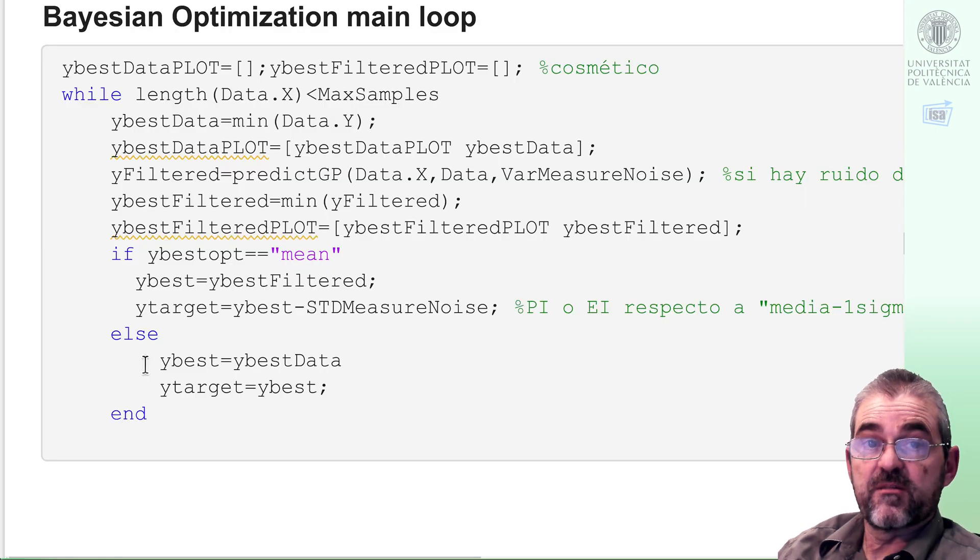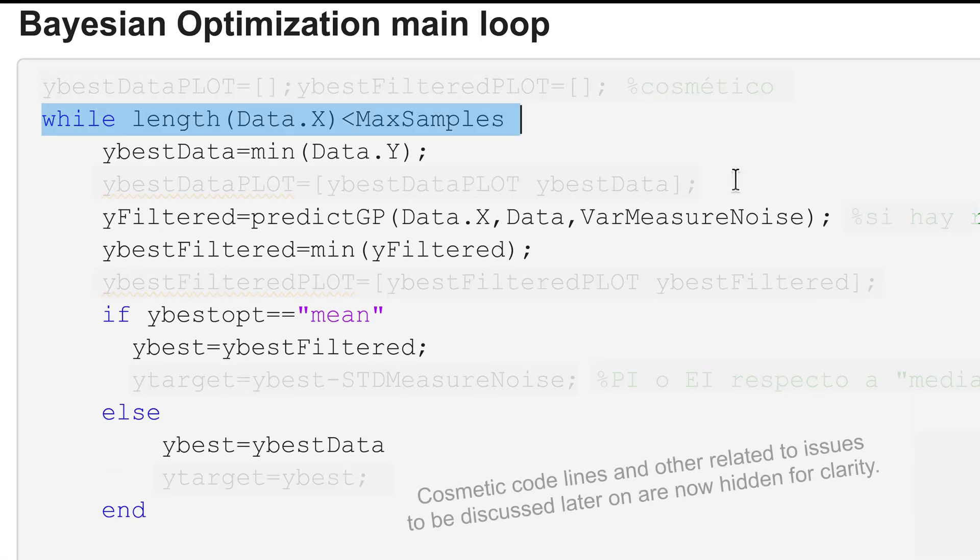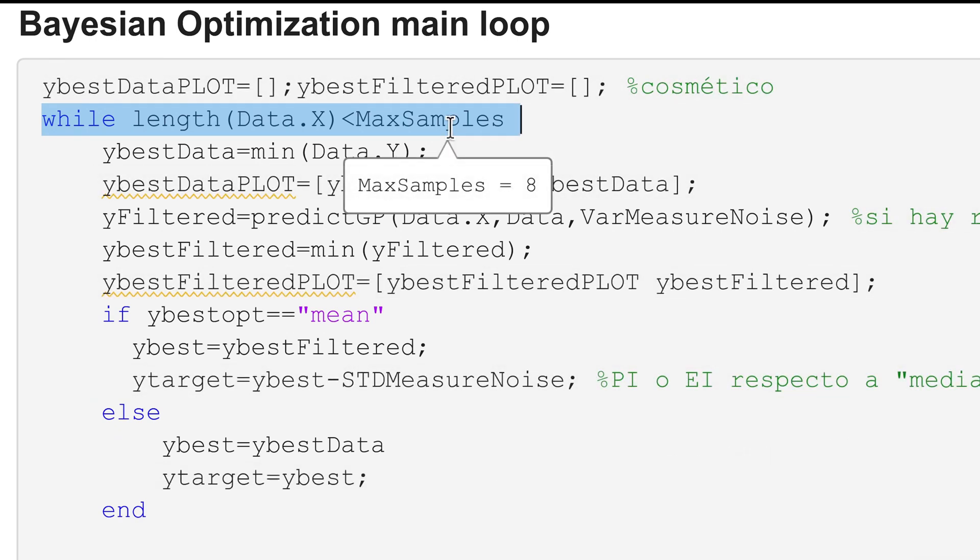So let us discuss the main loop in Bayesian optimization. We have some cosmetic plotting stuff that we are going to hide and we'll concentrate on the optimization loop in which we will repeat until we reach the maximum number of allowed samples. We start with two and in our particular example we are allowed to take six more samples.